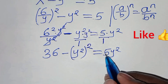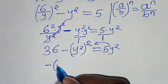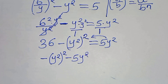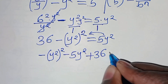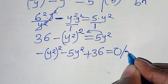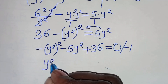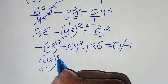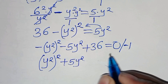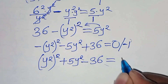The next step: let's take 5y squared to the left-hand side, so we have negative y squared to the power of 2 minus 5y squared plus 36 equals 0. Dividing both sides by negative 1, this becomes y squared to the power of 2 plus 5y squared minus 36 equals 0.